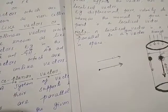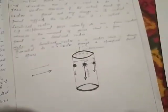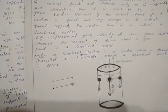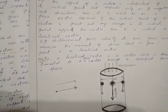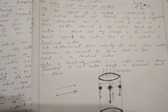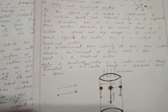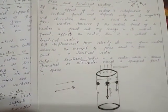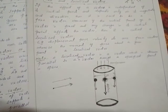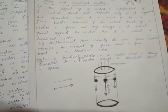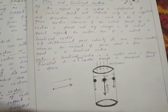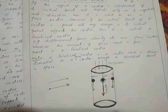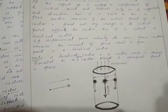So these were some types of vectors. I hope you understood them well. If you have any confusion, you can mention it in the comments. Khuda hafiz.